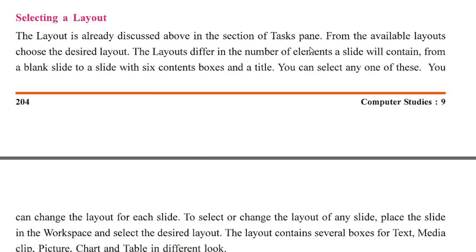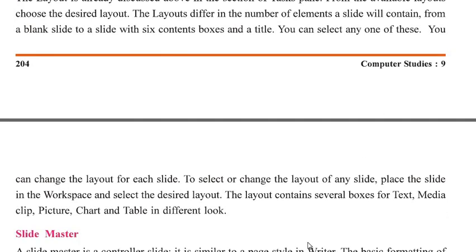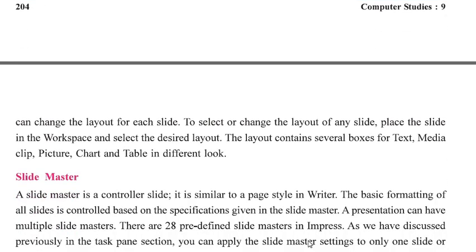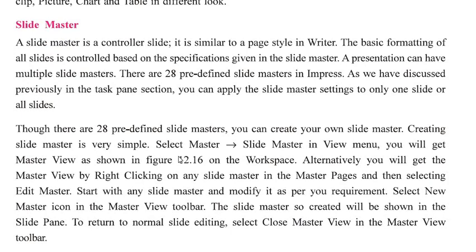Selecting a layout: the layout is already discussed in the task pane section. From the available layouts, choose the desired layout. Layouts differ in the number of elements a slide will contain — from a blank slide to a slide with six content boxes and a title. You can change the layout of each slide by placing the slide in the workspace and selecting the desired layout. The layout contains several boxes for text, media clips, pictures, charts, and tables.